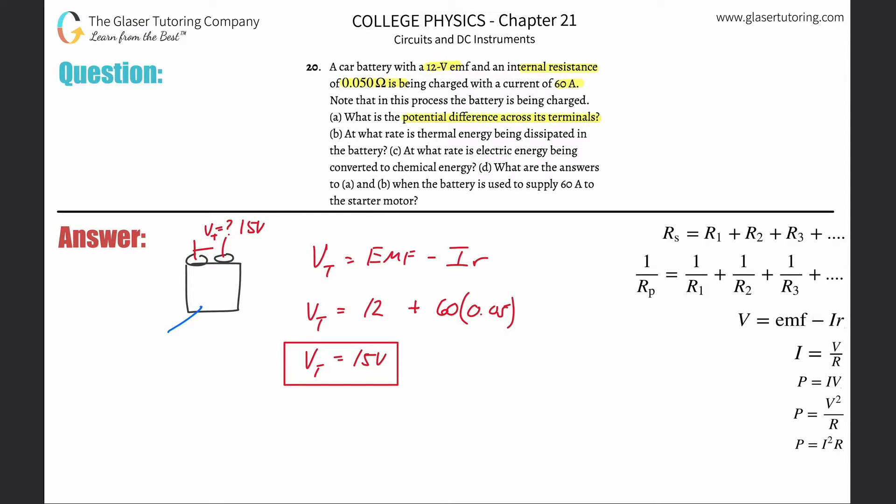That should make sense, right? The battery's EMF here was going to be 12 volts. And then the difference, the 15 and the 12, there was 3 volts lost. So 3 volts was lost to the internal resistance. 3 volts.